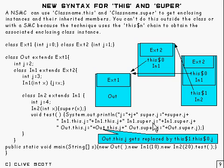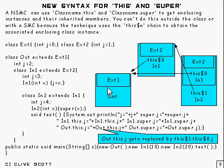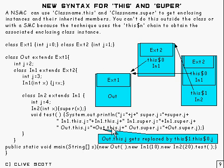Then we've got `in1.super.j`, which will be `ext2`'s `j`, going to be 1. Then `out.this.j` which is going to be 2, and `out.super.j` which will be 0. Of course, `out.this.j` is going to find itself replaced naturally by `this$1` to get up to the enclosing class `in1`, and then `this$0` to get to the `out` class. So that's what gets replaced internally.